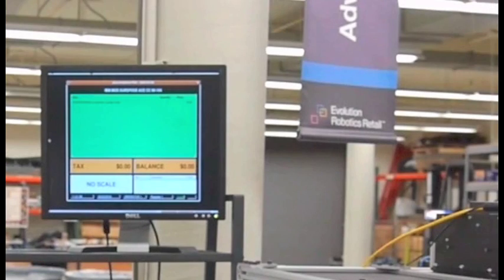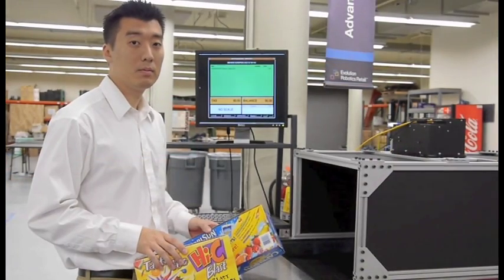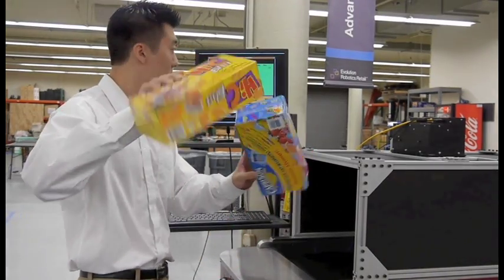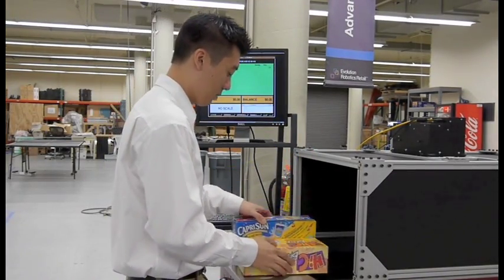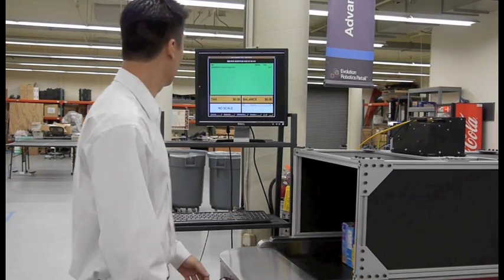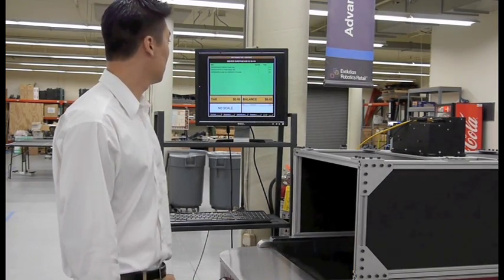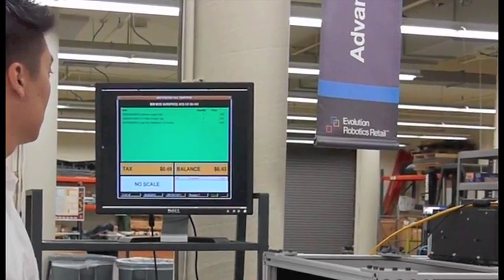When you view this from another angle, watch the point of sale display to see how quickly the items are recognized by the Viper software and rung up. As you can see, both the Capri Sun and the Hi-C juices are recognized by Viper before the items even exit the tunnel, and neither item required the barcode to be scanned.